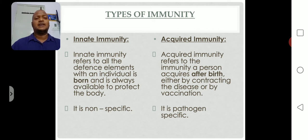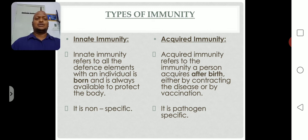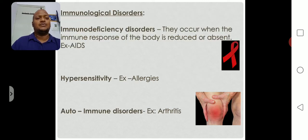Pathogen-specific means: if a virus enters the body, only the antiviral cells respond; if bacteria enter, only antibacterial cells respond and destroy them. So to summarize: innate immunity is the by-birth, non-specific immunity; acquired immunity develops after birth through antigens, disease, or vaccination, and it is pathogen-specific. The remaining immunological disorders will be discussed in the next class. Thank you very much, bye bye.